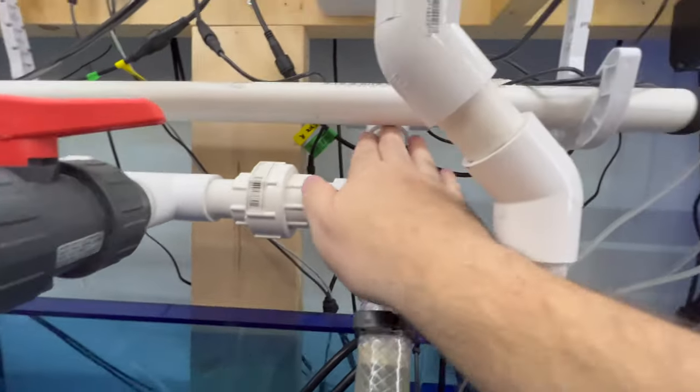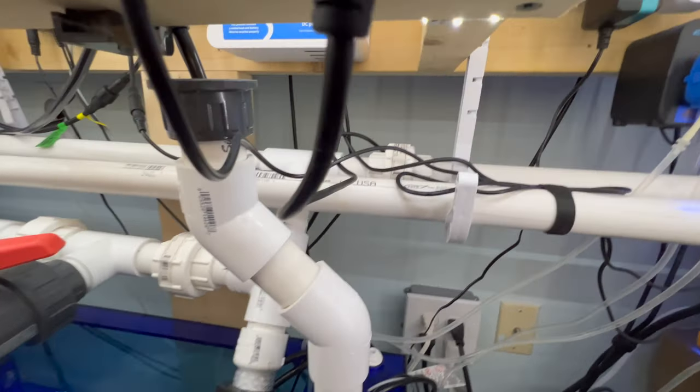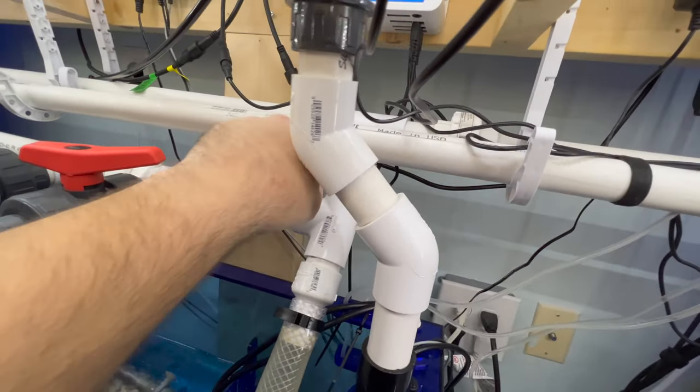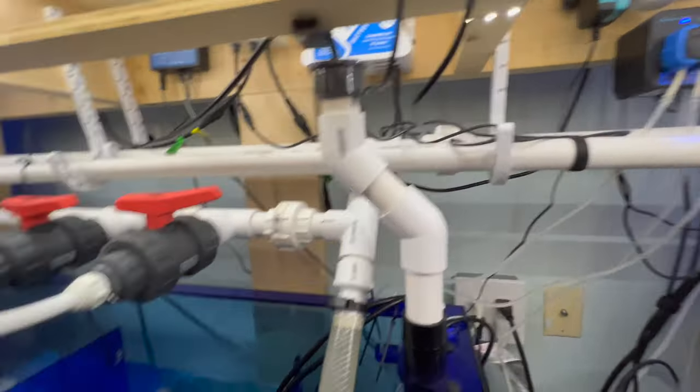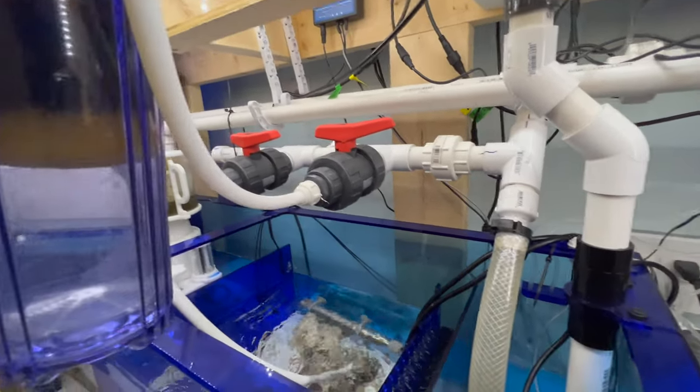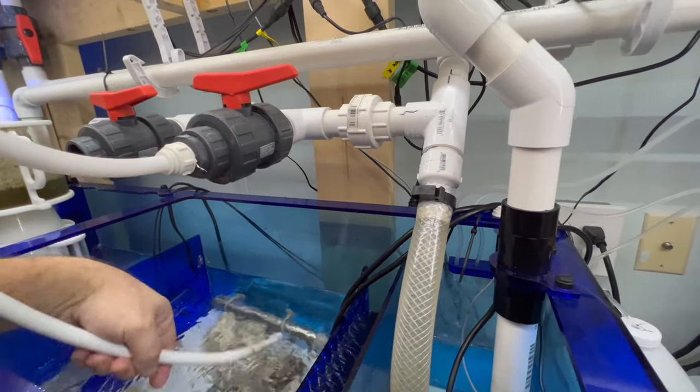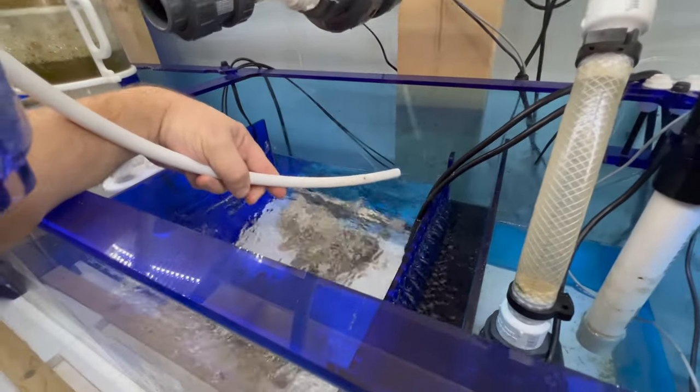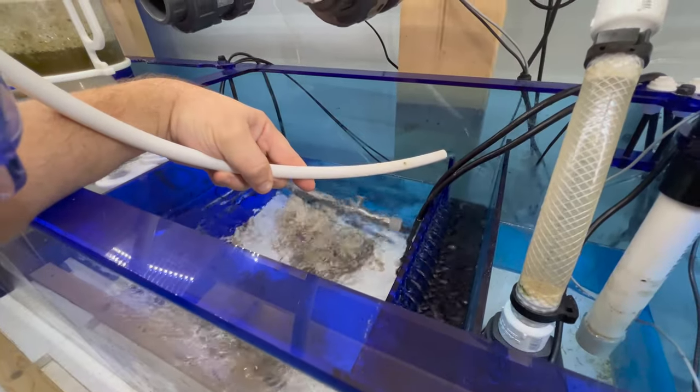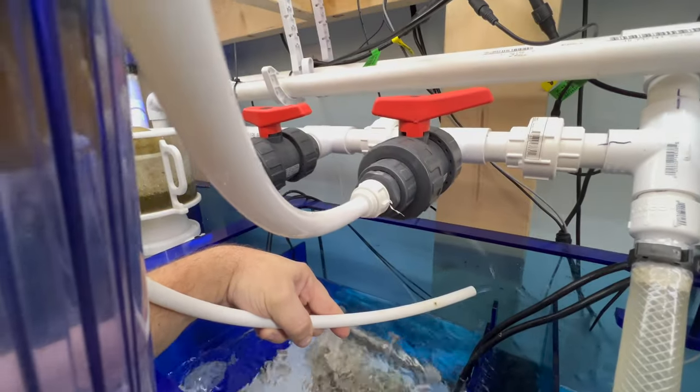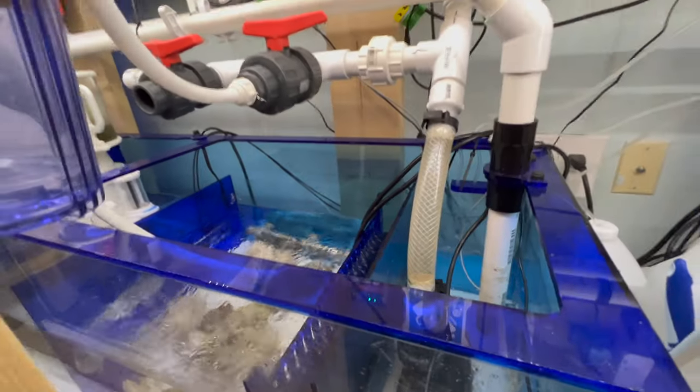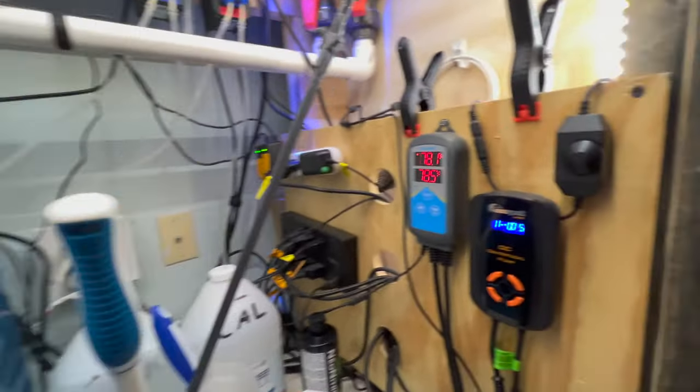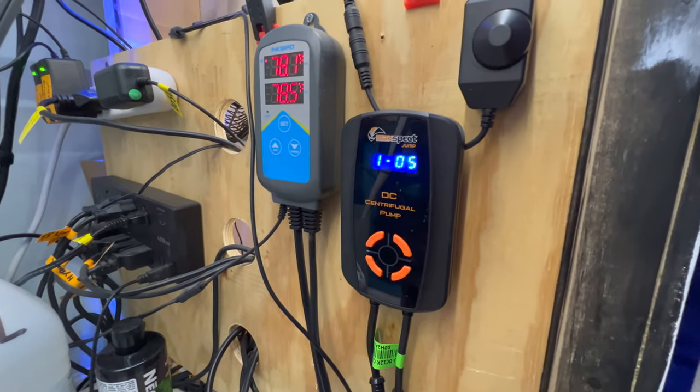So that goes up and it tees off right up here. It goes left and right to go to the return section as well as the manifold. And the flow is plenty strong enough. It is pouring out pretty good and that valve is just about cracked. So there's definitely plenty of power. I have that set at number five of 10.